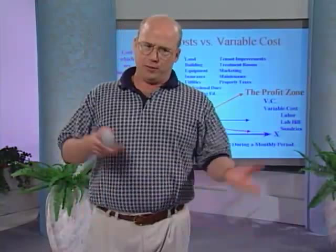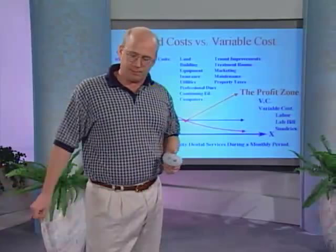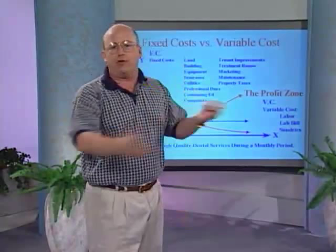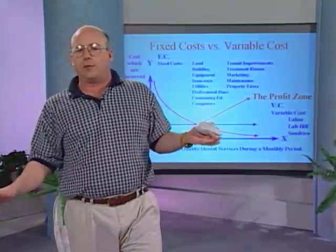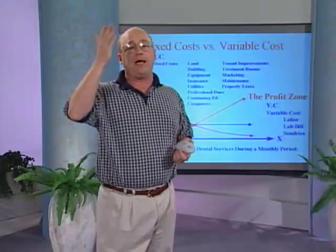They load in all the information — how many hamburger patties left, how many cups left, all the data — and their management information system gives them one report that any $2,000-a-month manager could read and understand what they're doing right and what they're doing wrong. Their decisions are so easy to make because they're given the score in such an easy-to-use way.